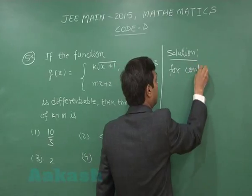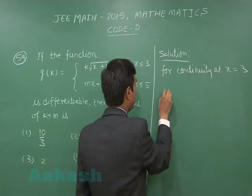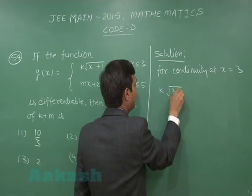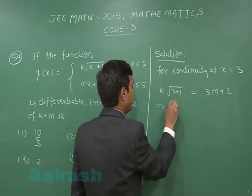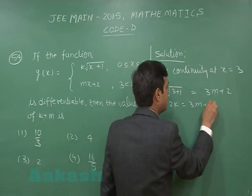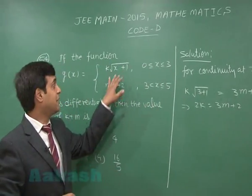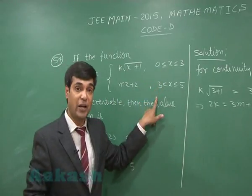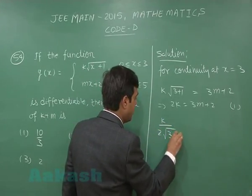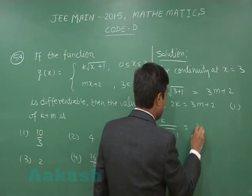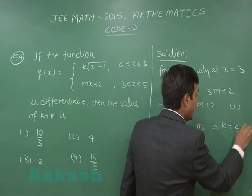For continuity at x=3: k·root(3+1) must equal 3m+2, giving 2k = 3m+2 — equation 1. For differentiability, since the function is continuous, we differentiate both sides excluding x=3, and observe that k divided by 2·root(3+1) should equal m.